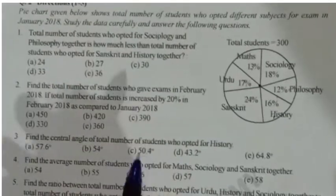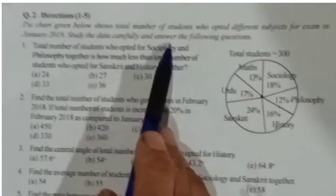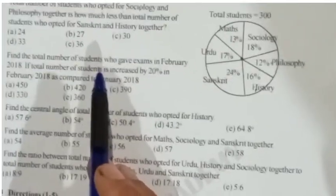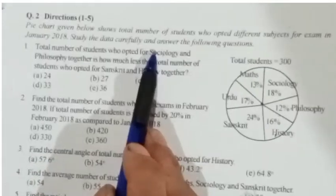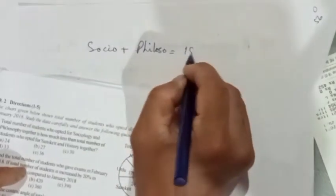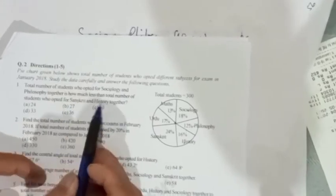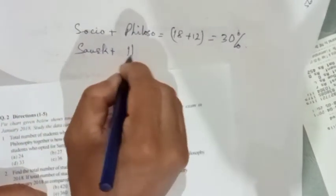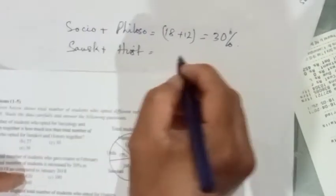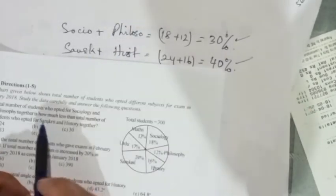So this is a percentage of people interested in the difference. Let's look at sociology and philosophy. So this is the percentage. Let's look at the history and Sanskrit. History is 24 plus 16, which gives us 40% of people who are interested in this. So how much is less?